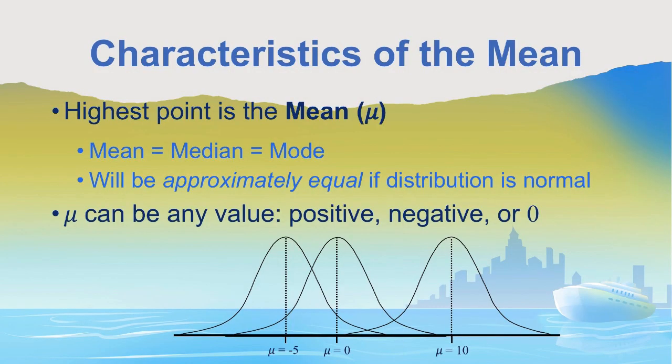The mean can be any value — it could be positive, it could be negative, it could be zero. Because so many things can be modeled with this normal curve, we can have normal distributions with any type of mean.